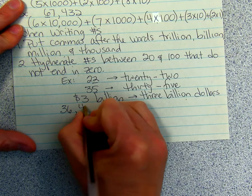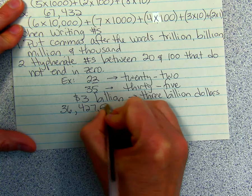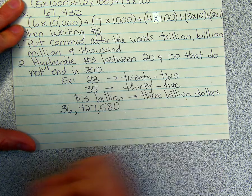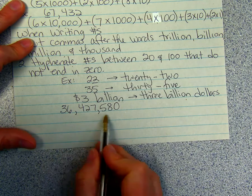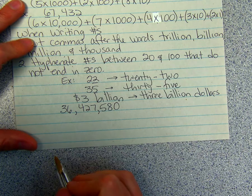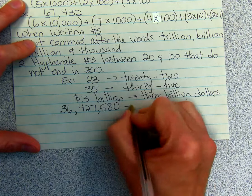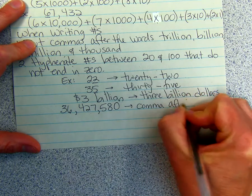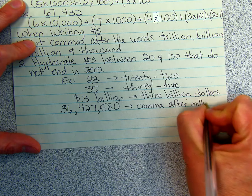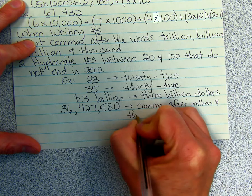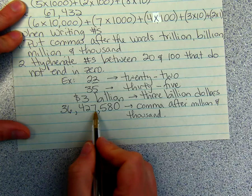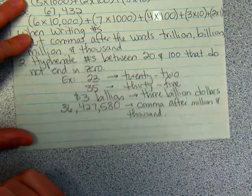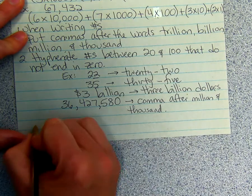Here's a number. You just need to notice where the commas are. Notice the comma after million and thousand. This is 36,427,580. If I wanted to write this, I would say 36. Notice it doesn't end in a 0, so I have to hyphenate it.